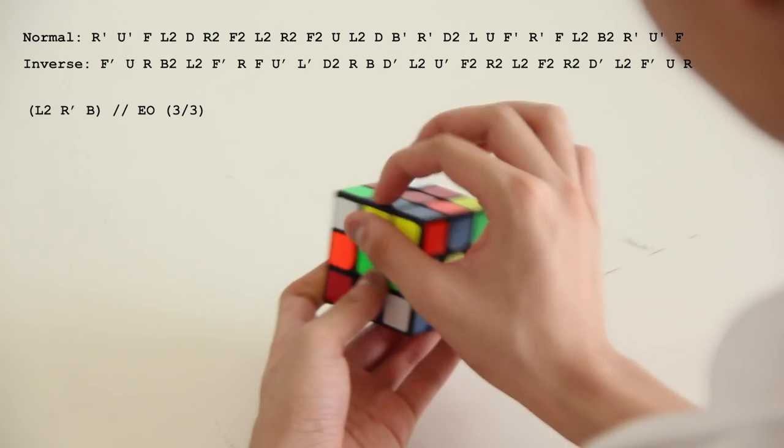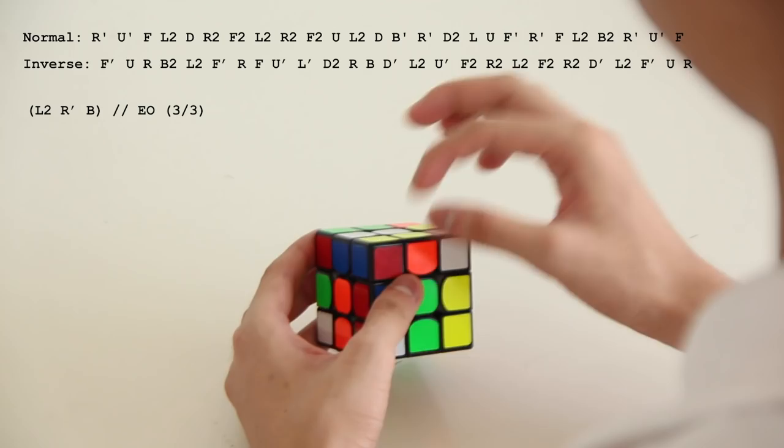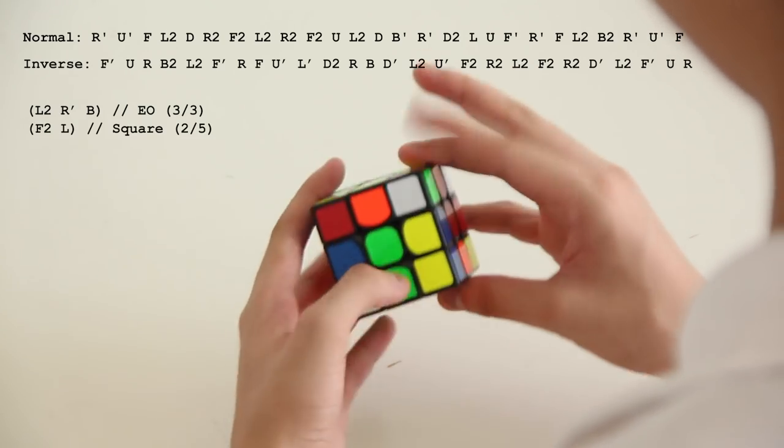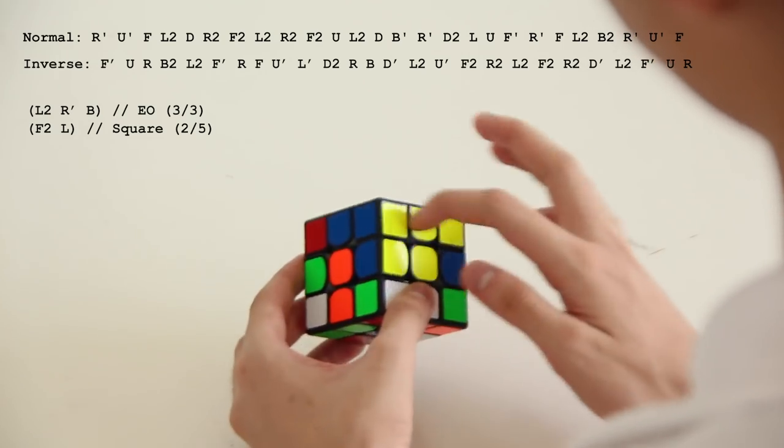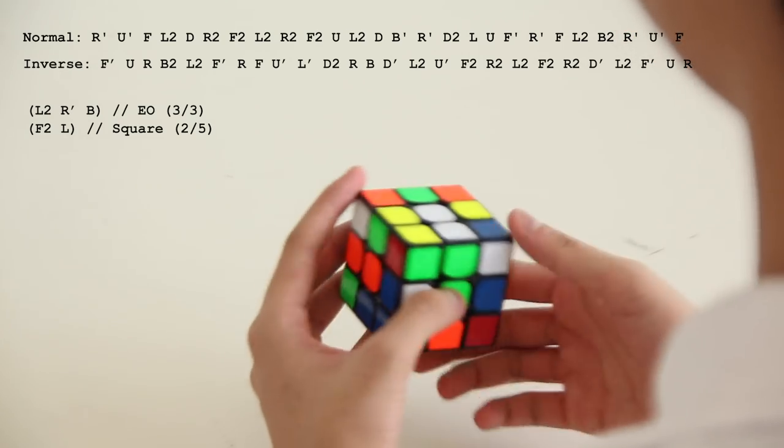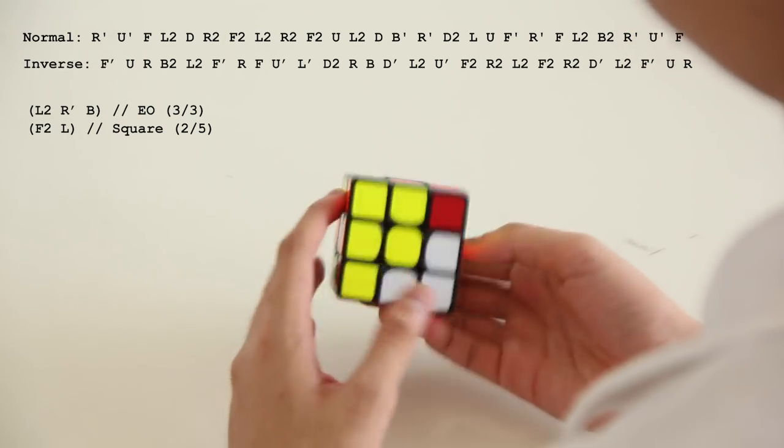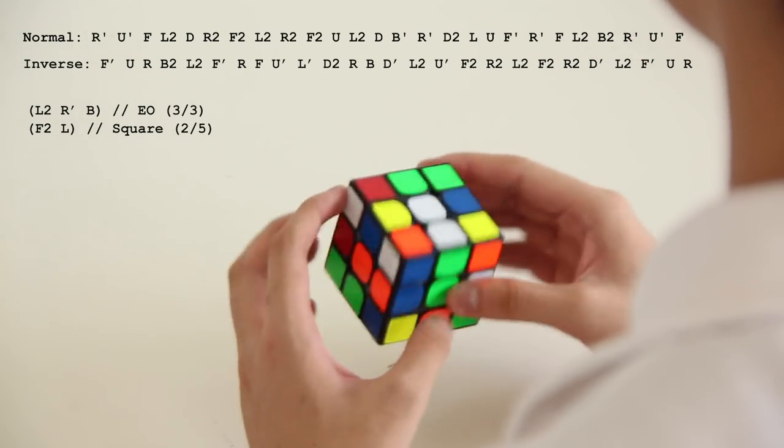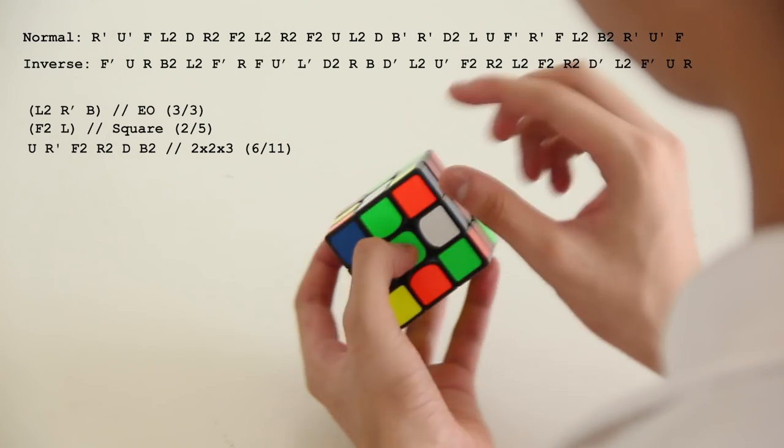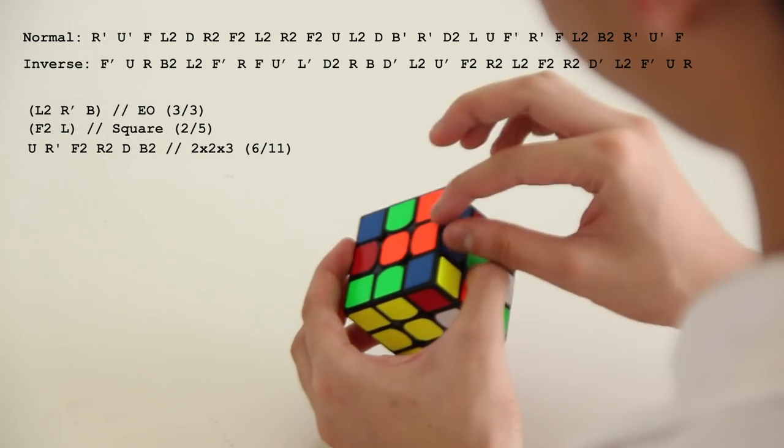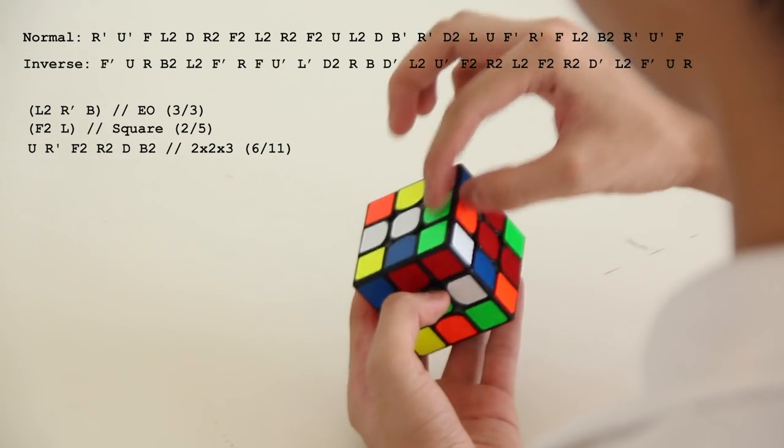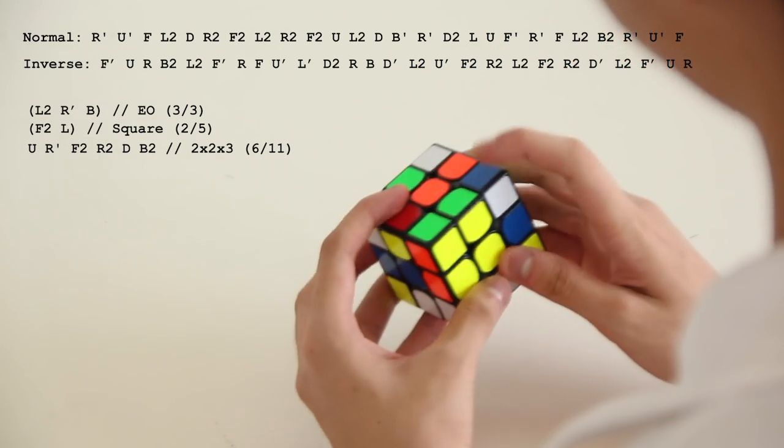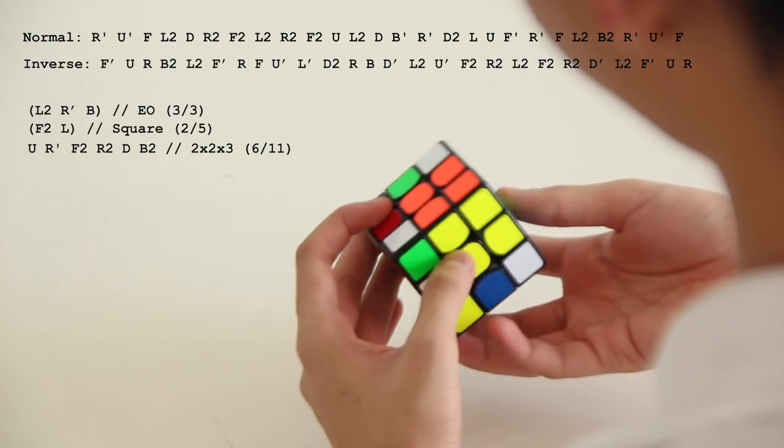And after that there's this block that appears and this edge. So you can make an easy square in two moves by doing F2, L. After that I switched back to the normal scramble. So here in the normal scramble we still have this square. And I decided to make a 2 by 2 by 3. So first I connected this pair, U, and then inserted this edge to where it should be, R', F2.